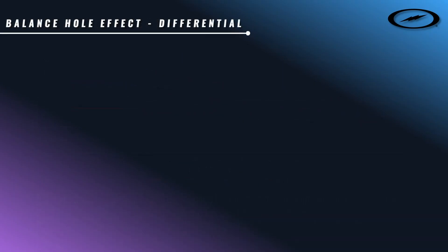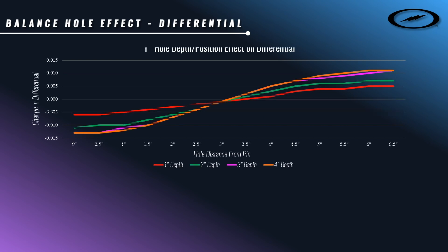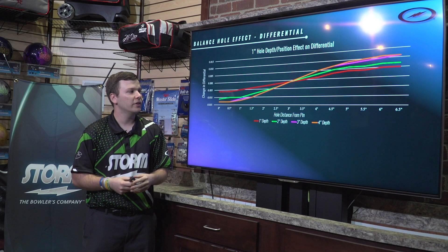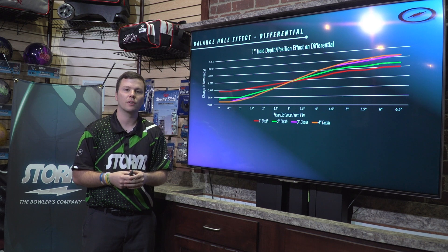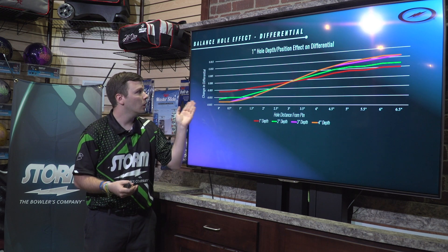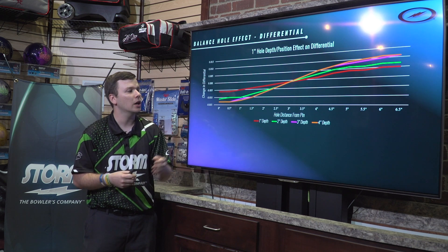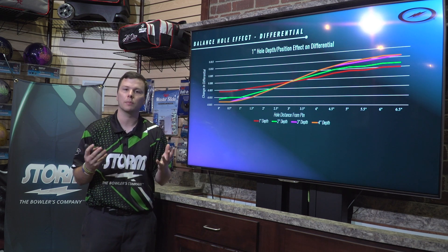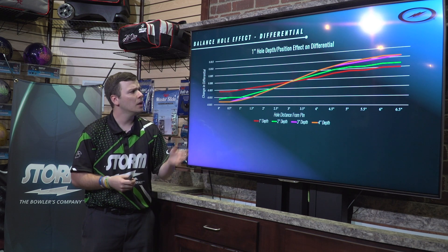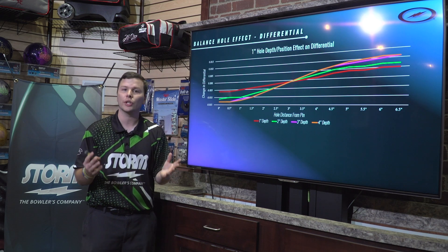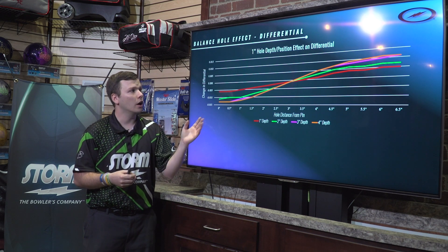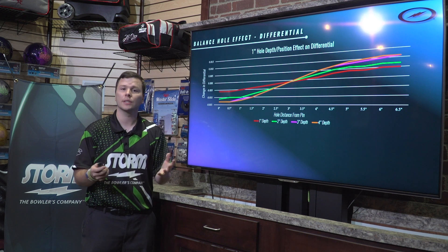Now that we understand RG, we'll move on to our second number: total differential. Total differential is the difference in RG values from the X to the Y axis. We have a similar type of graph here — hole distance from the pin is still our X-axis, and change in differential is our Y-axis. We have the same color lines representing the exact same depths.